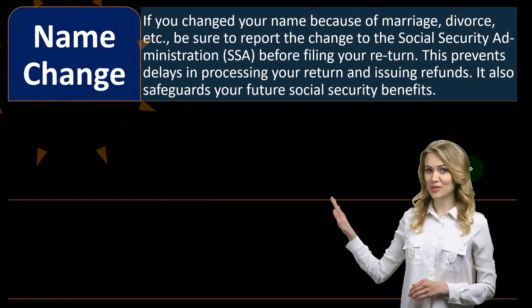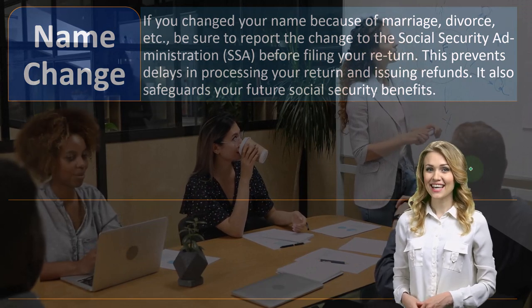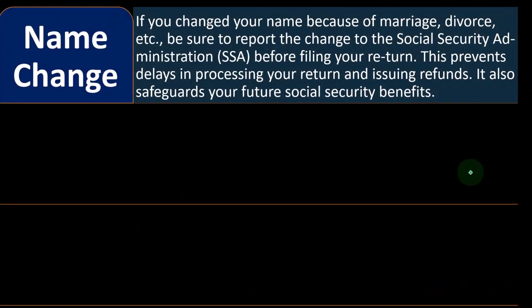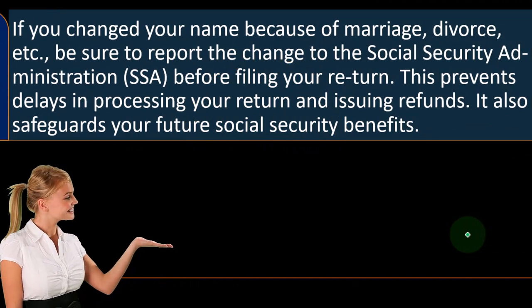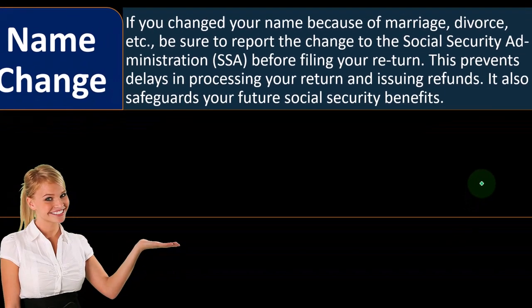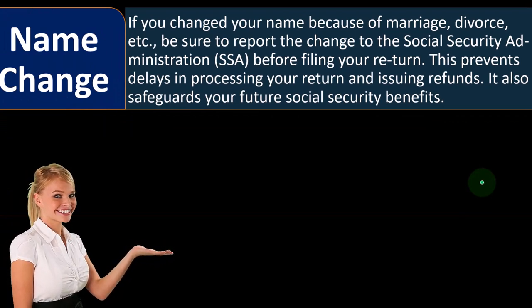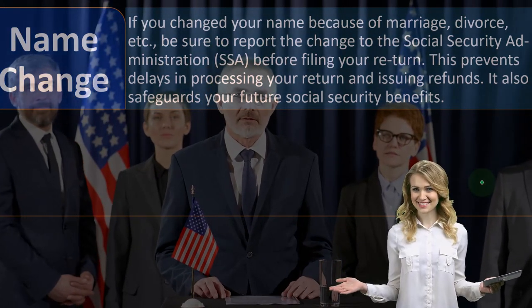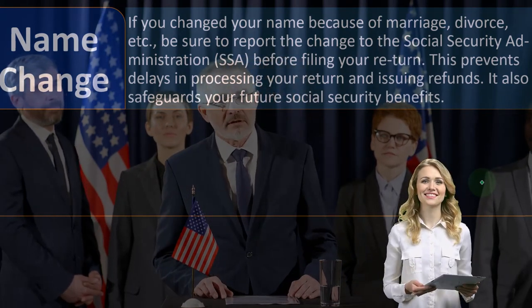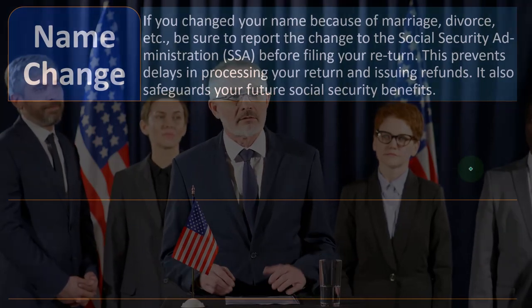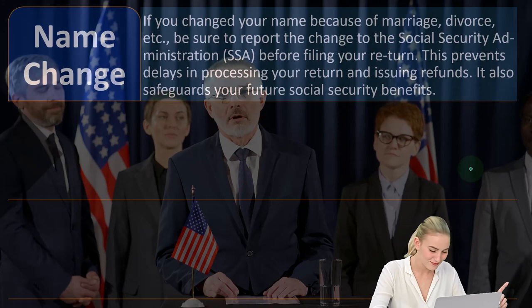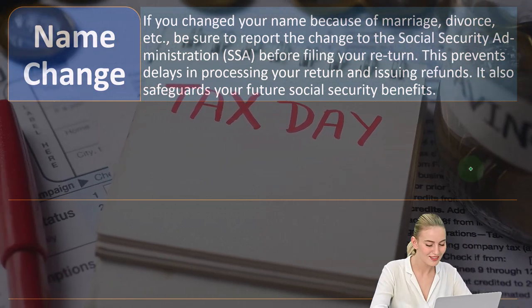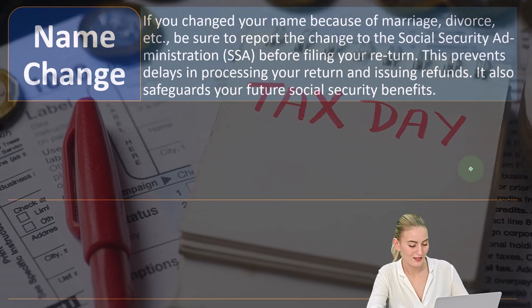Name change: if you changed your name because of marriage, divorce, or any other reason, be sure to report the change to the Social Security Administration (SSA) before filing your return. The IRS ties your name to your Social Security number, so if the name on the return doesn't match what the SSA has on file, it could cause problems — you might not even be able to file electronically. Notifying the SSA prevents delays in processing your return and issuing refunds.